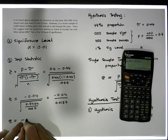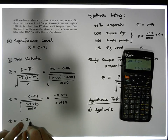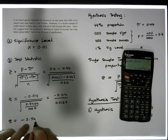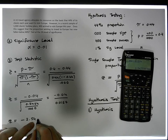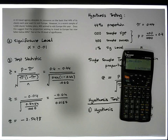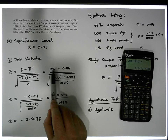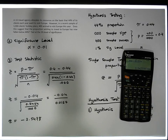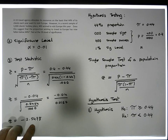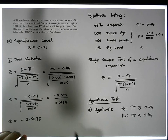So the test statistic is minus 2.5478 to four decimal places. You'll need to agree with your examiner or lecturer on how many decimal places to round to. My test statistic in this case is minus 2.5478 — that's just basic arithmetic up to this stage.